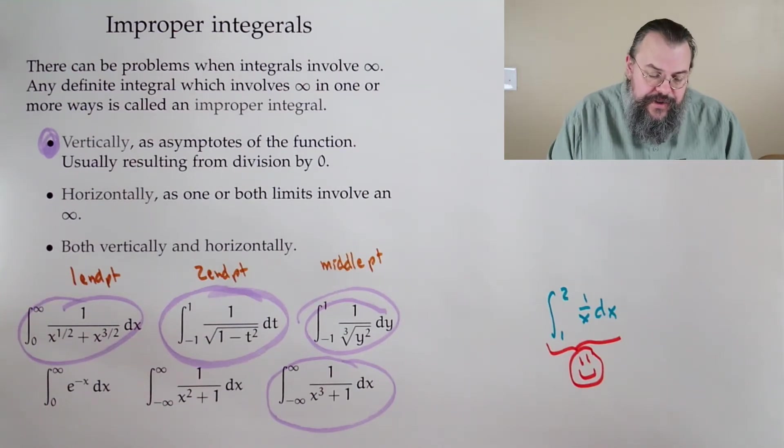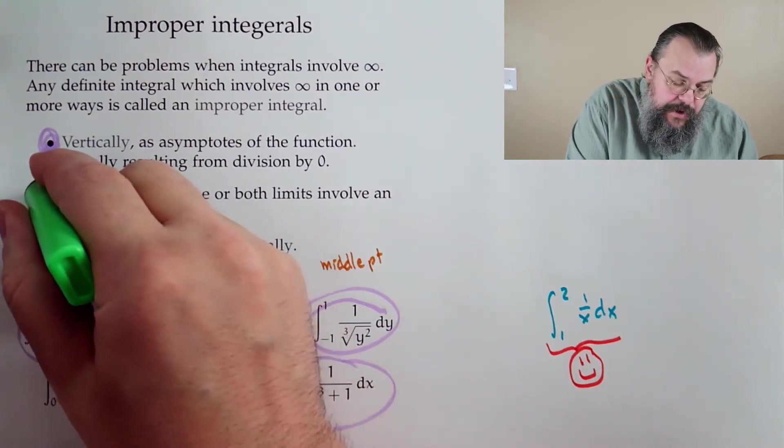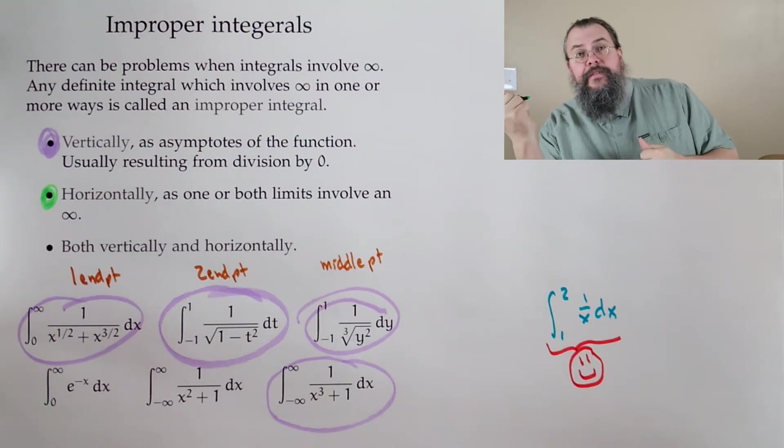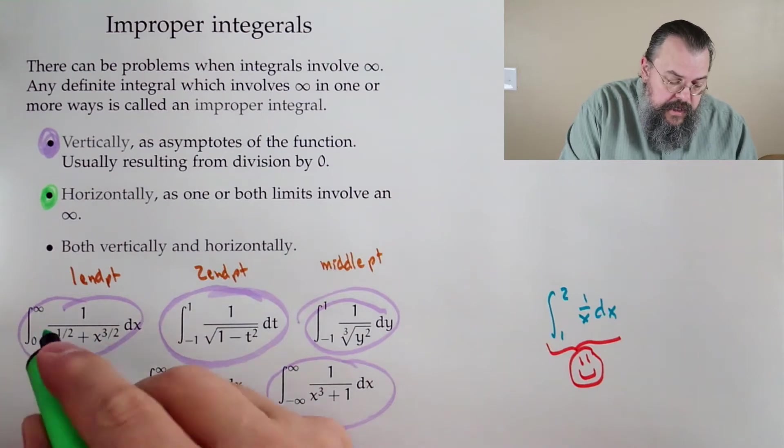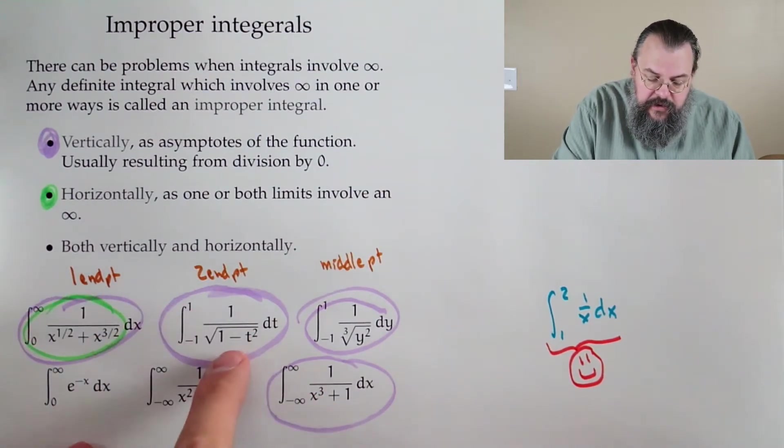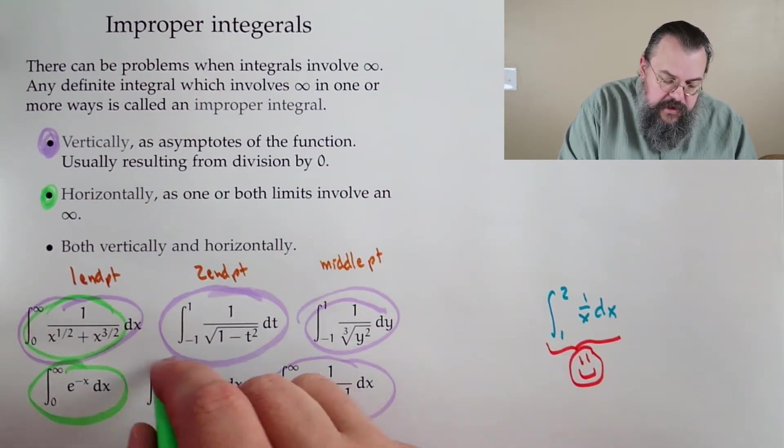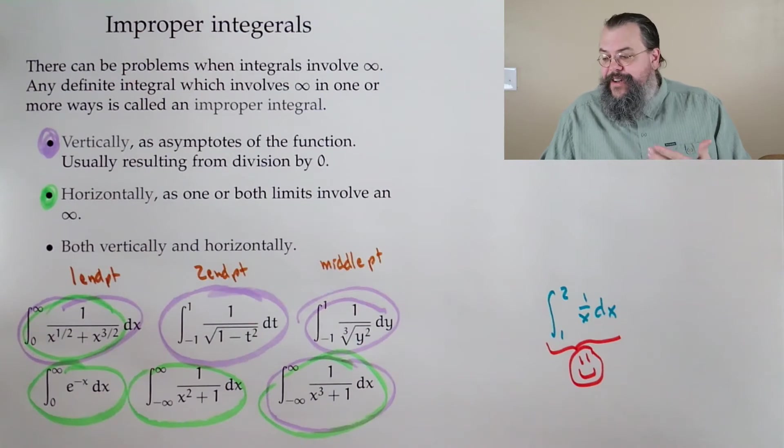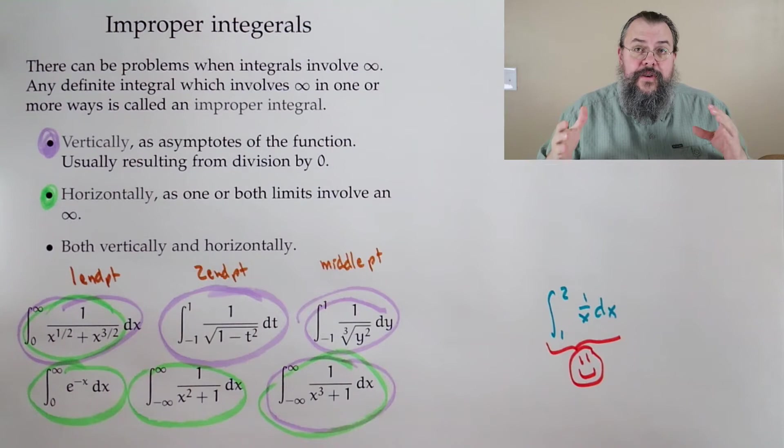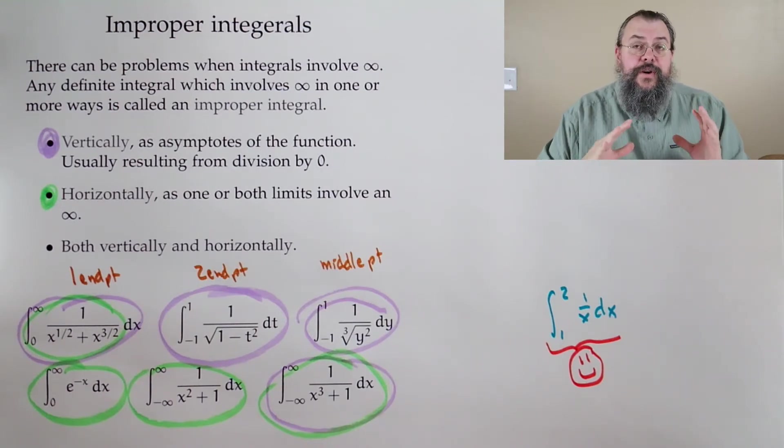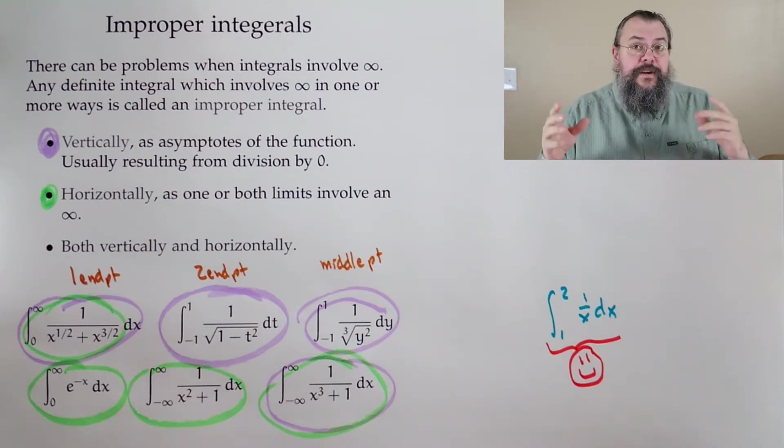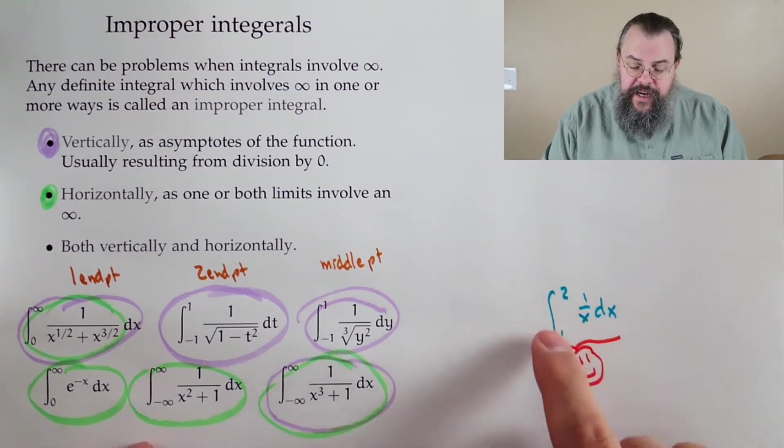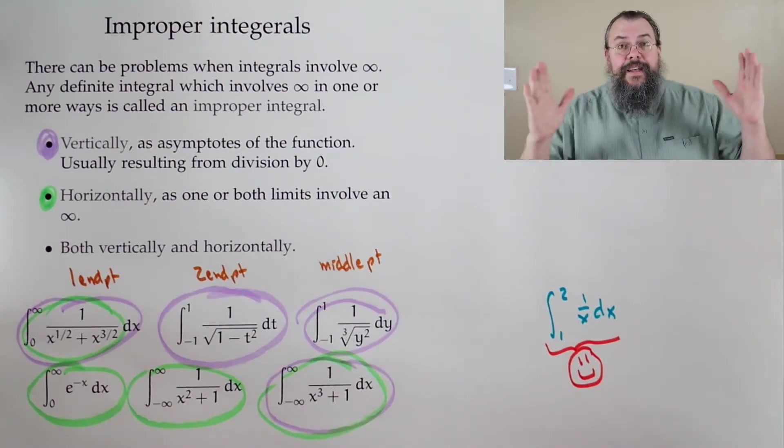The horizontal kind are easy to spot. We care about, do we go off to the infinities? We have two varieties - positive infinity and negative infinity. So we have to check both. Anything with infinity involved? These ones involve infinity in the bounds. You can have both vertical and horizontal issues where you have to deal with them. Make sure you know how to spot an improper integral.